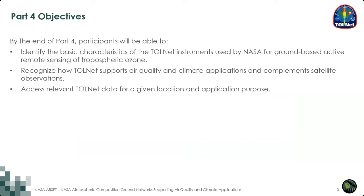By the end of Part 4 of our training series today, we hope participants will be able to identify the basic characteristics of the TOLNet instruments used by NASA for ground-based active remote sensing of tropospheric ozone, recognize how TOLNet supports air quality and climate applications and complements satellite observations, and access relevant TOLNet data for a given location and application purpose.